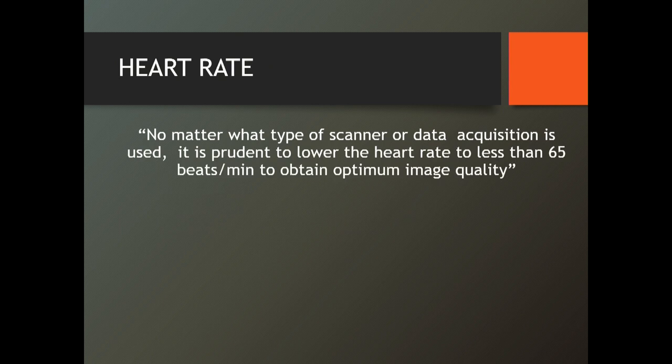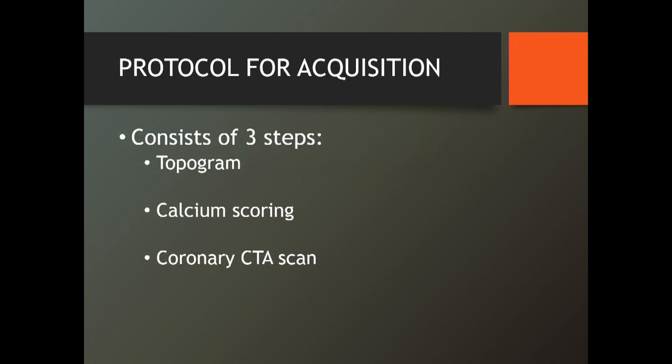No matter what scanner or data acquisition is used, it's prudent to lower the heart rate to less than 65 to 70 beats per minute to obtain a good quality picture. With dual source dual energy, many times we don't do it, but I have both single source and dual source dual energy available, so we can do that.